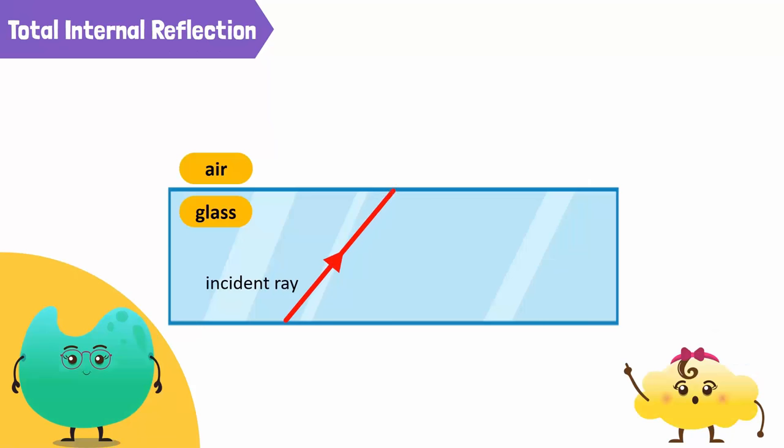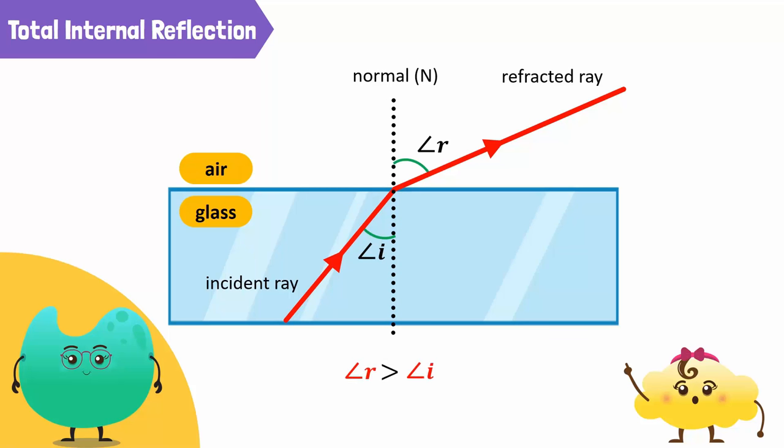A ray of light passing from a dense medium to a rare medium refracts and bends away from the normal. Here, the angle of refraction is greater than the angle of incidence.